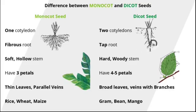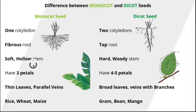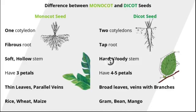The stem of monocot plants is soft and hollow, but the stem of dicot plants is hard and woody.